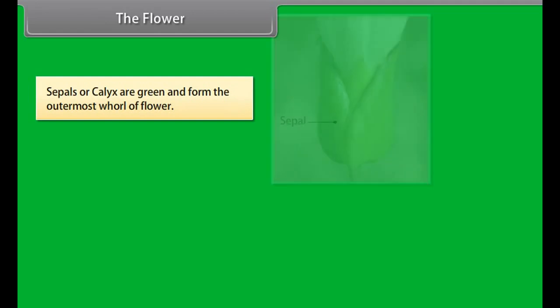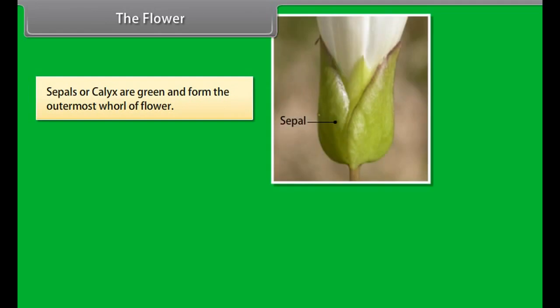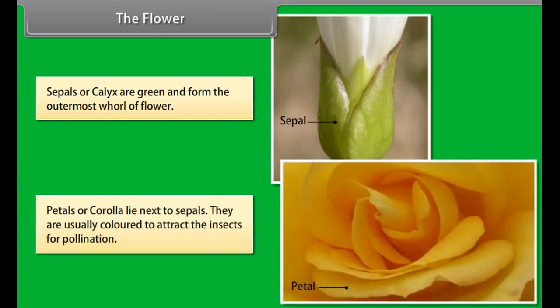Sepals, or calyx, are green and form the outermost whorl of the flower. Petals, or corolla, lie next to the sepals. They are usually colored to attract insects for pollination.